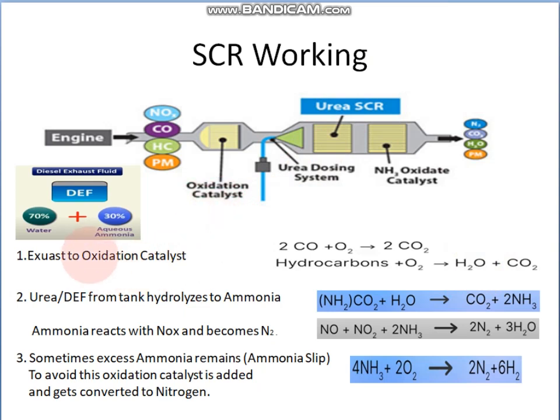Then we have the urea or DEF — diesel exhaust fluid — which is one of the main components of this system. It consists of 70% water and 30% aqueous ammonia, also called automobile urea. It is stored in a separate tank, from which the injector injects the right amount of urea through a nozzle. The urea gets hydrolyzed with the incoming water and converts into ammonia.